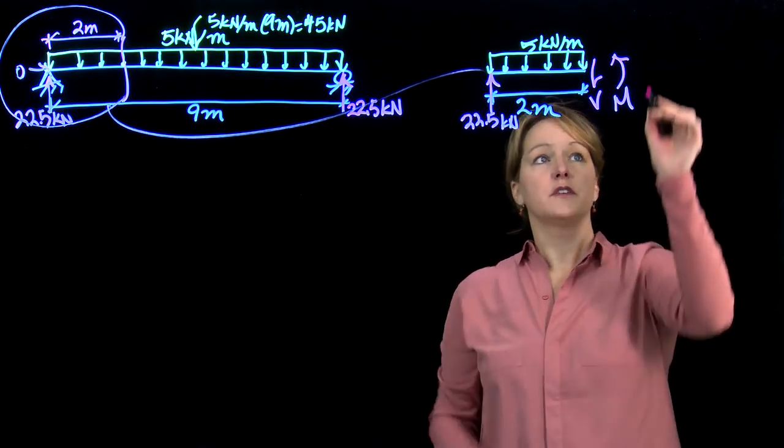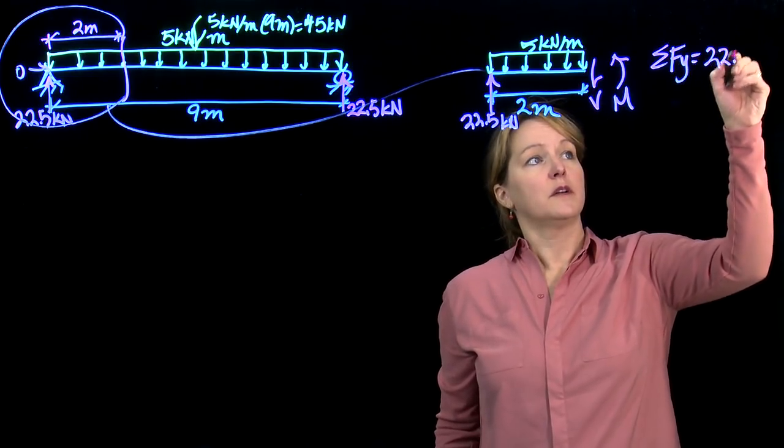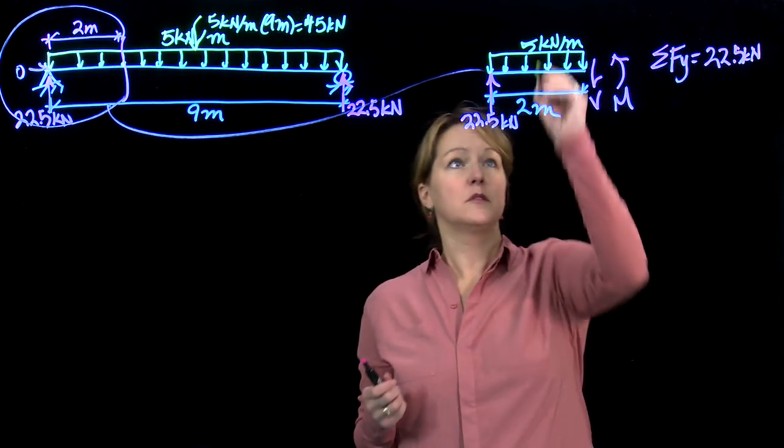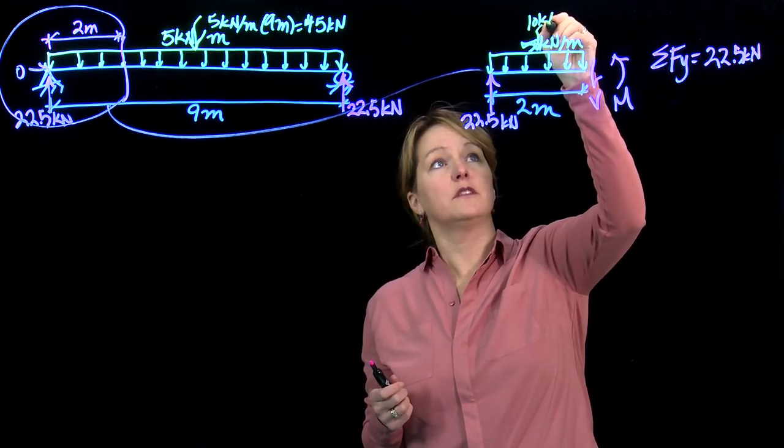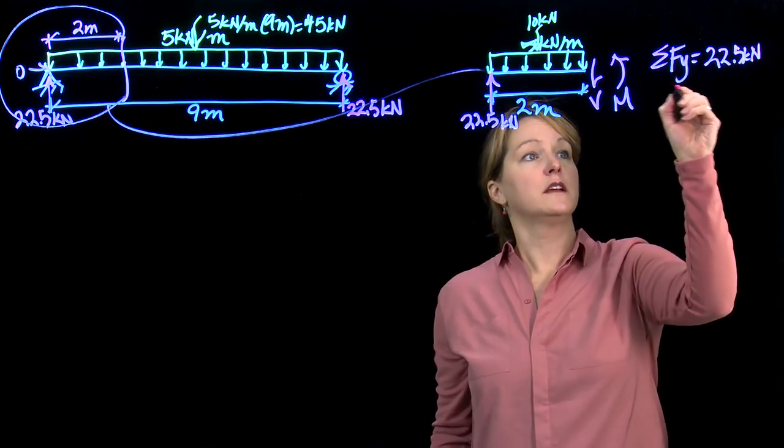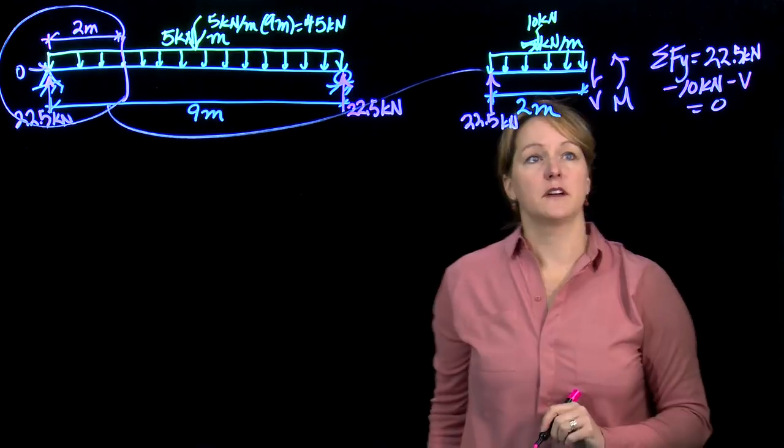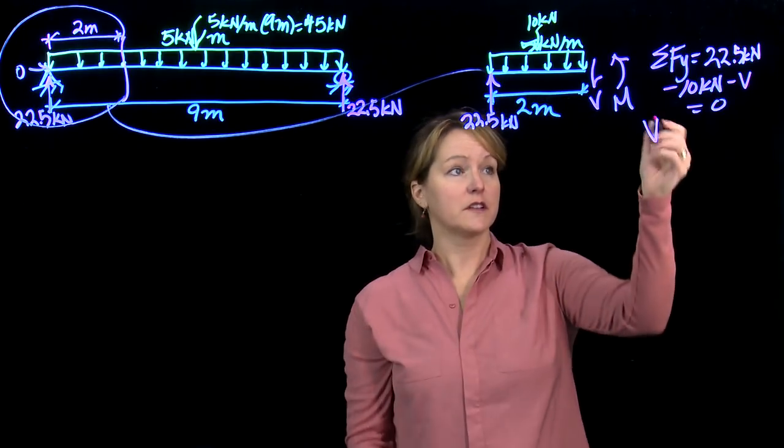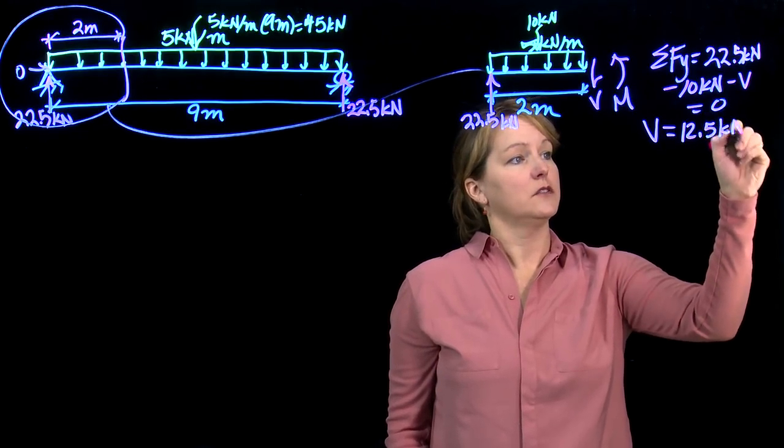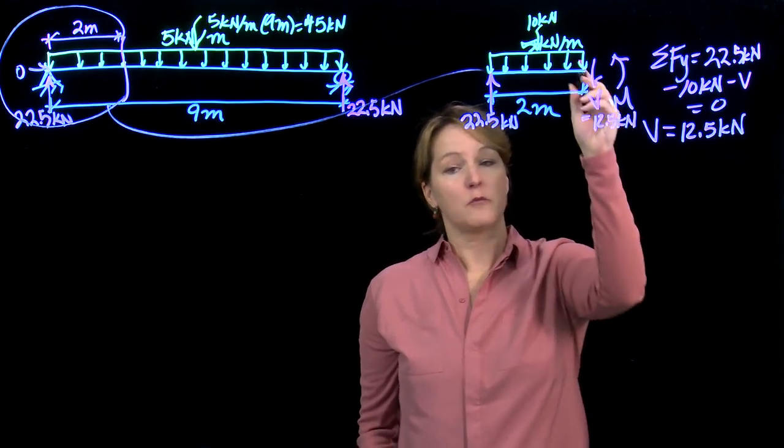Let's do the shear force first, summing forces in the y direction. I have upward 22.5 kilonewtons, downward a total of 10 kilonewtons (5 kilonewtons per meter acting over 2 meters), and a downward V. That all equals zero. I can solve for V, which is the shear force, and that should be 12.5 kilonewtons. So I know what the shear force across this face is, and that's what I would use to design at that location.